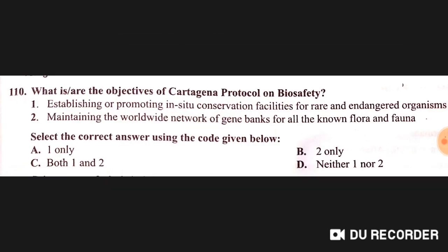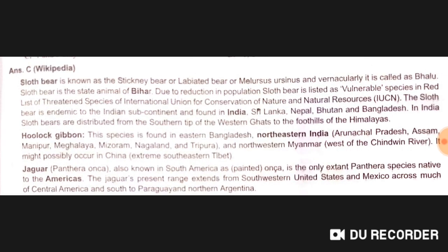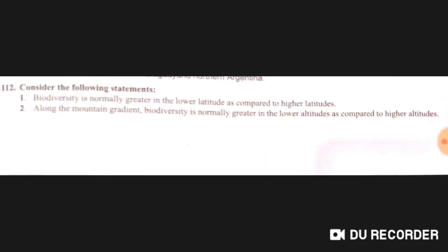The objective of the Cartagena Protocol on Biosafety does not include establishing conservation facilities for endangered organisms or maintaining a worldwide network of gene banks — answer D: neither. Regarding natural habitat in India, sloth bear and Hoolock gibbon are found — first and third options.